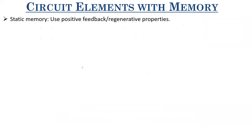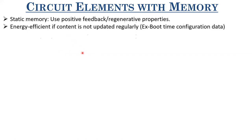In this lecture, we would be looking at some of the ways in which we can realize those registers. There are two kinds of circuit elements depending upon their nature. One of them is static memory. Similar to combinational circuit design where you have static CMOS design and dynamic design, even with memories or registers, we have two kinds of design. One is static design, where we use positive feedback or regenerative properties to realize these registers. However, it is energy efficient only if the content is not updated regularly.